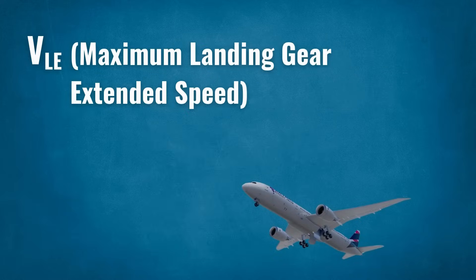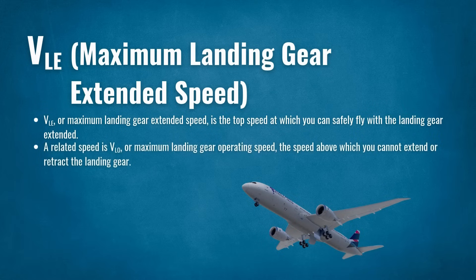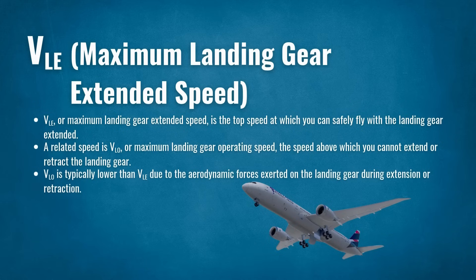VLE, or Maximum Landing Gear Extended Speed, is the top speed at which you can safely fly with the landing gear extended. A related speed is VLO, or Maximum Landing Gear Operating Speed — the speed above which you cannot extend or retract the landing gear. VLO is typically lower than VLE due to the aerodynamic forces exerted on the landing gear during extension or retraction.